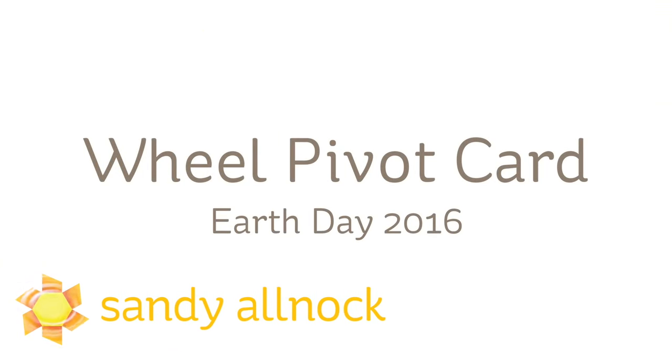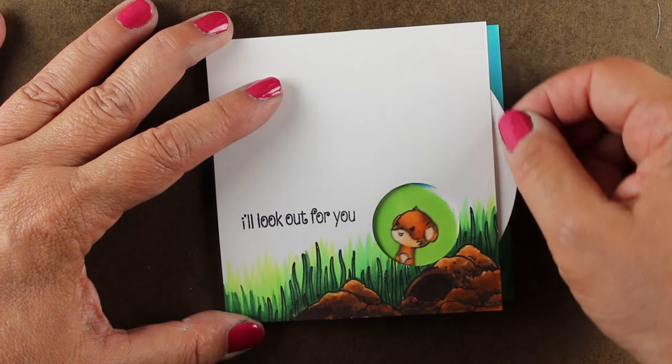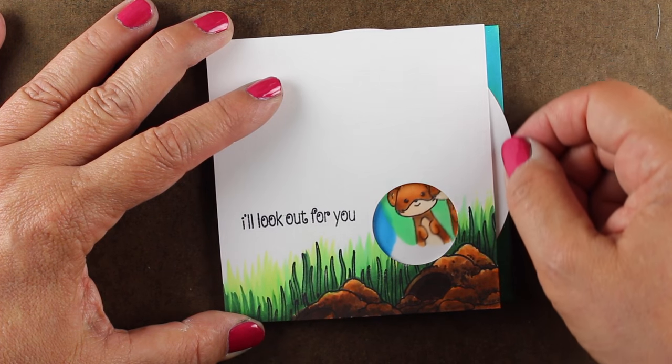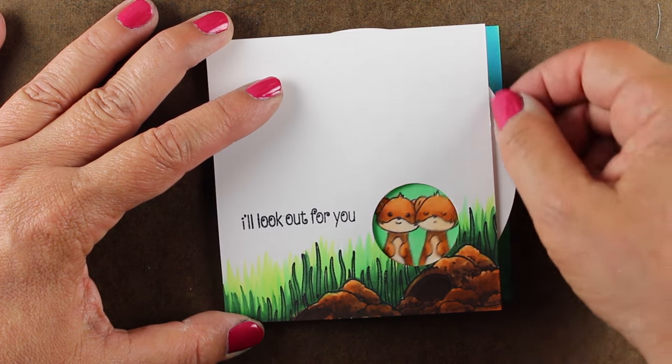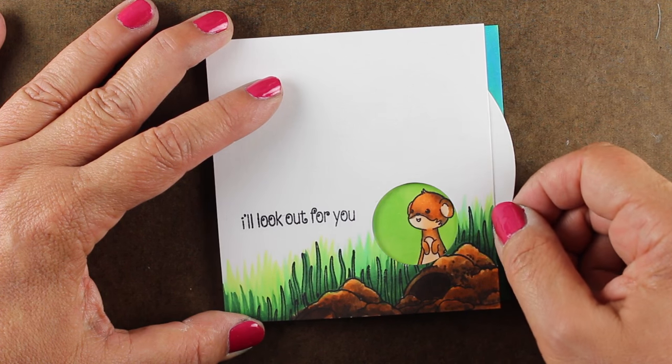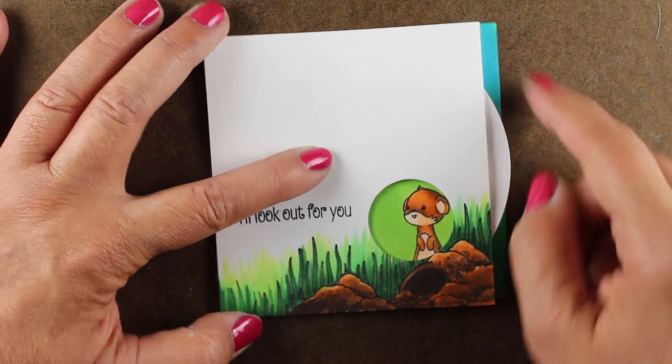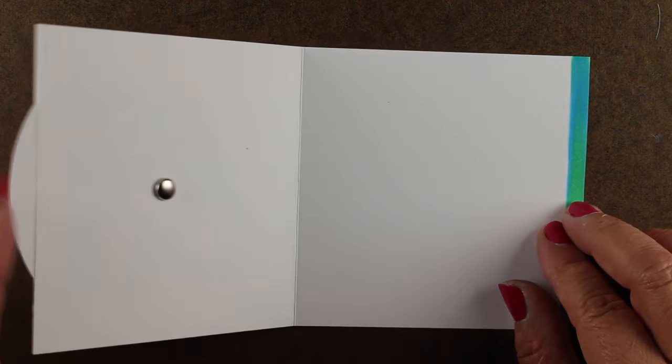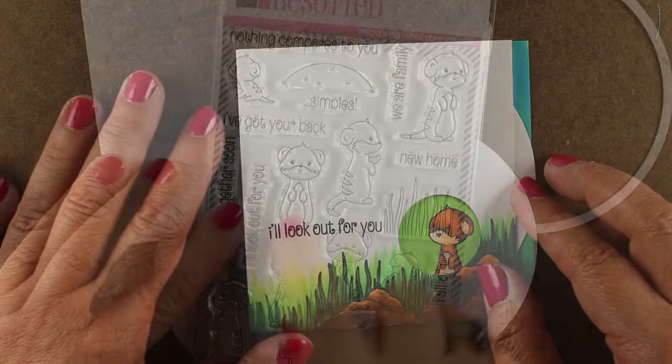Today I'm going to show you a wheel pivot card or a spinning card. There's a lot of different names for cards like this. This one has my own construction to it. I couldn't find any that had a construction like this as I was inventing it. I wanted one where I could have the spinning effect going on, but I'd have my brad hidden. The hinge that they're all spinning around on is hidden on the inside of the card. All you see is the top of the brad.